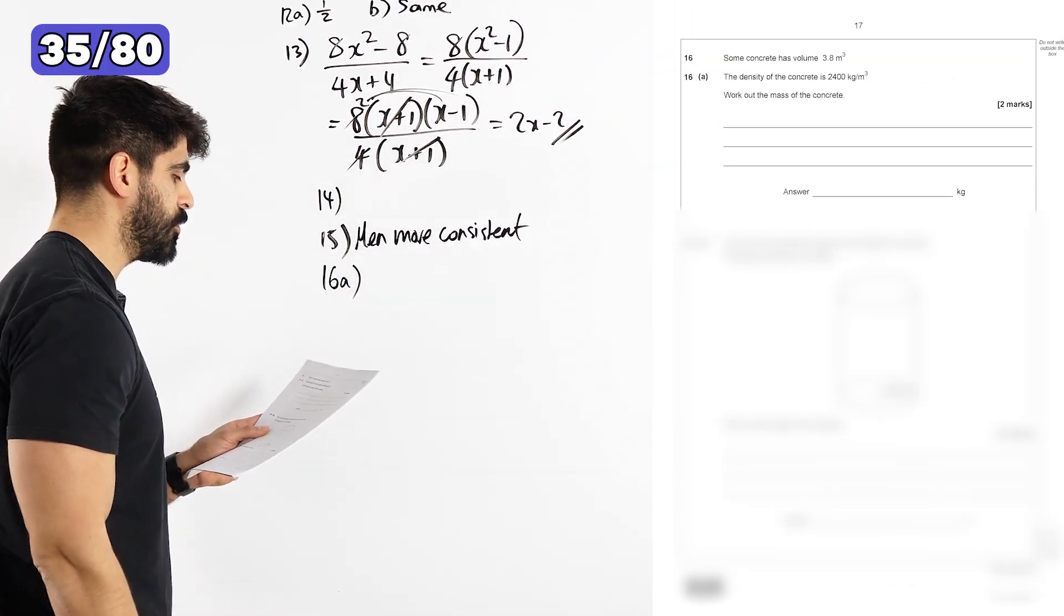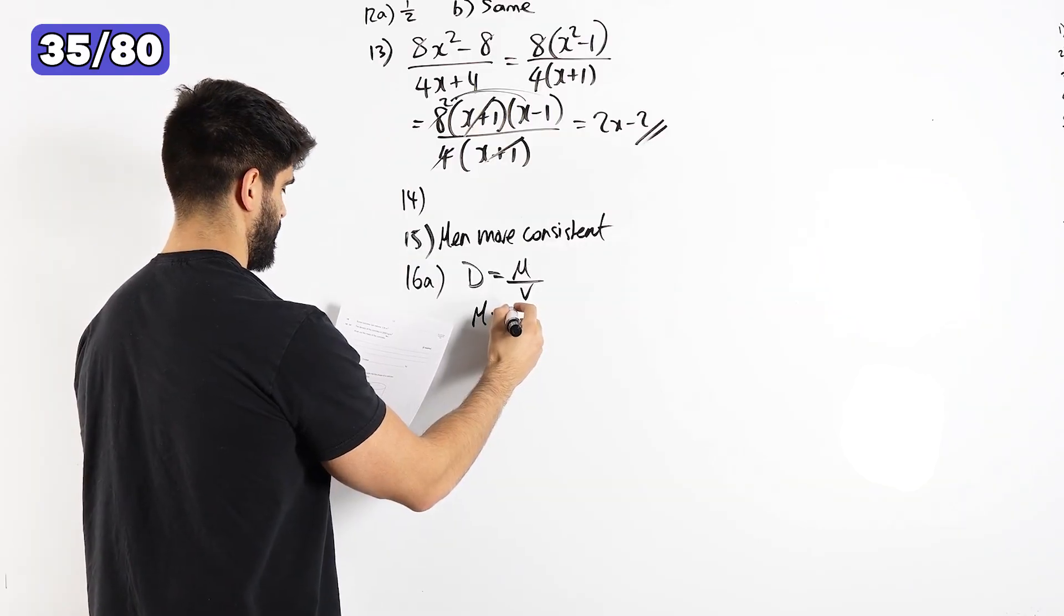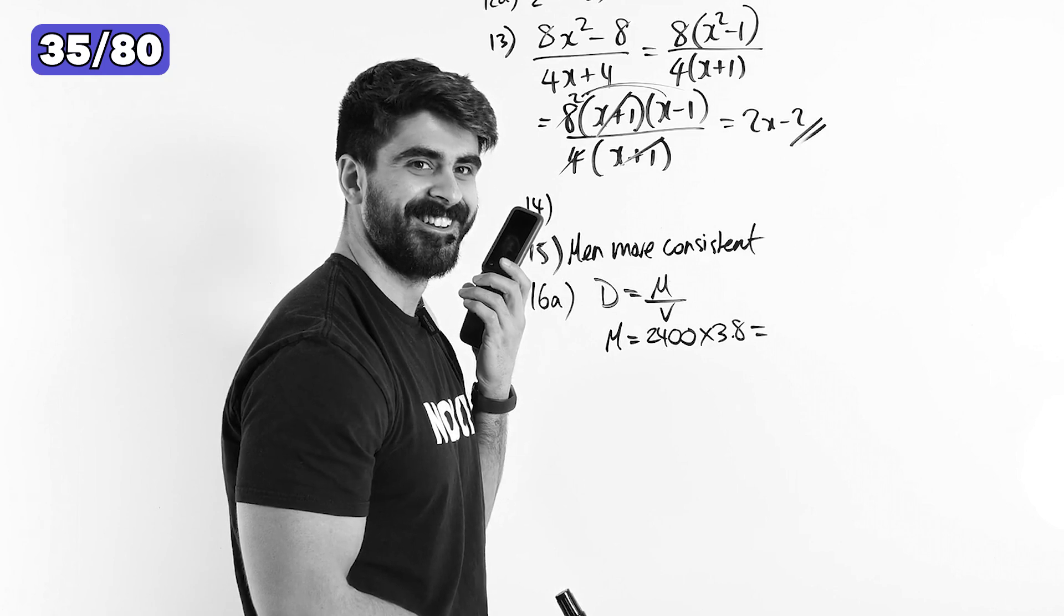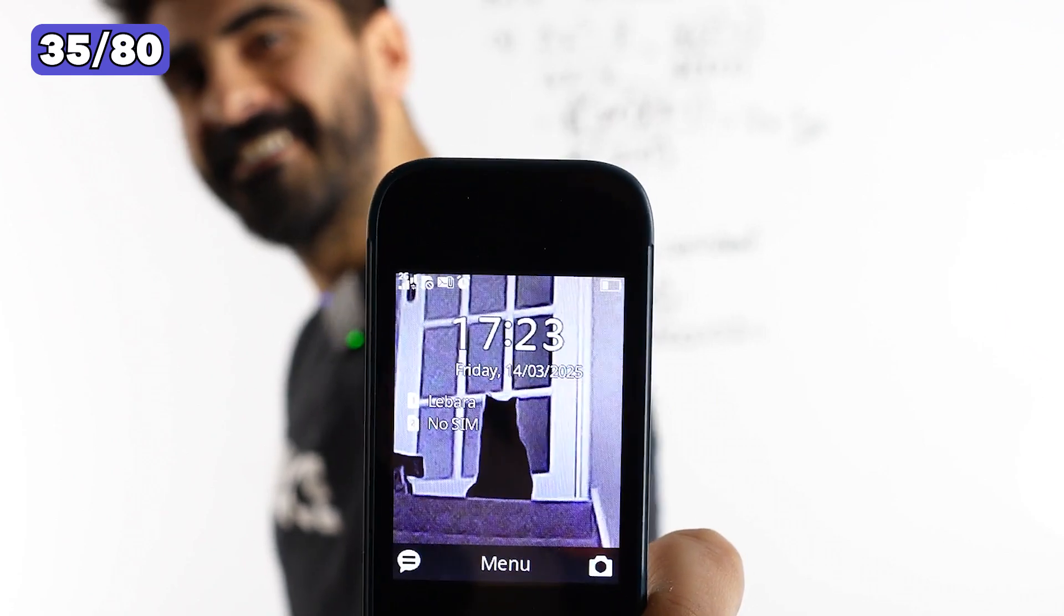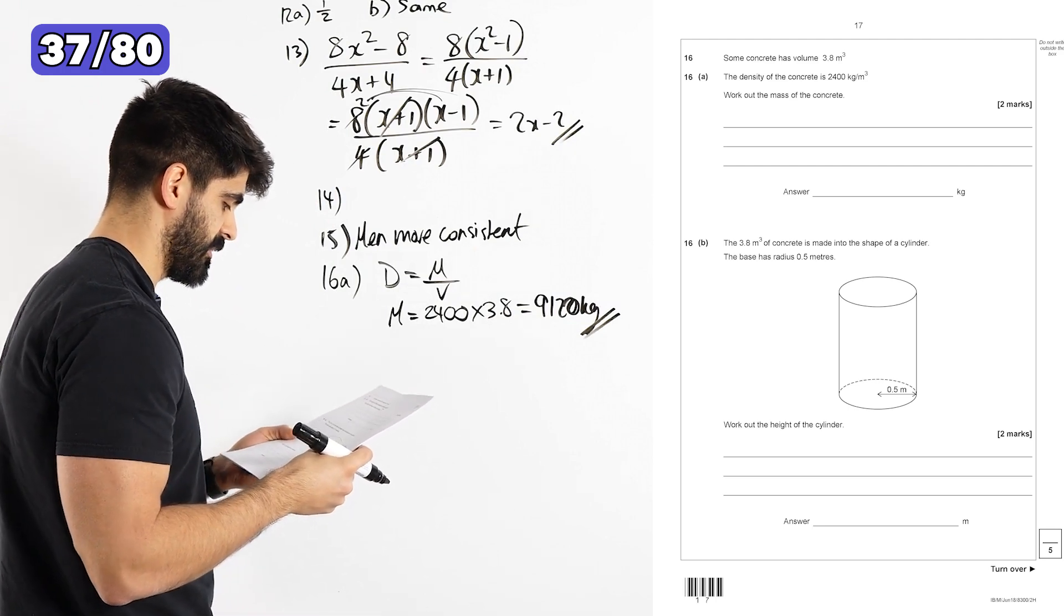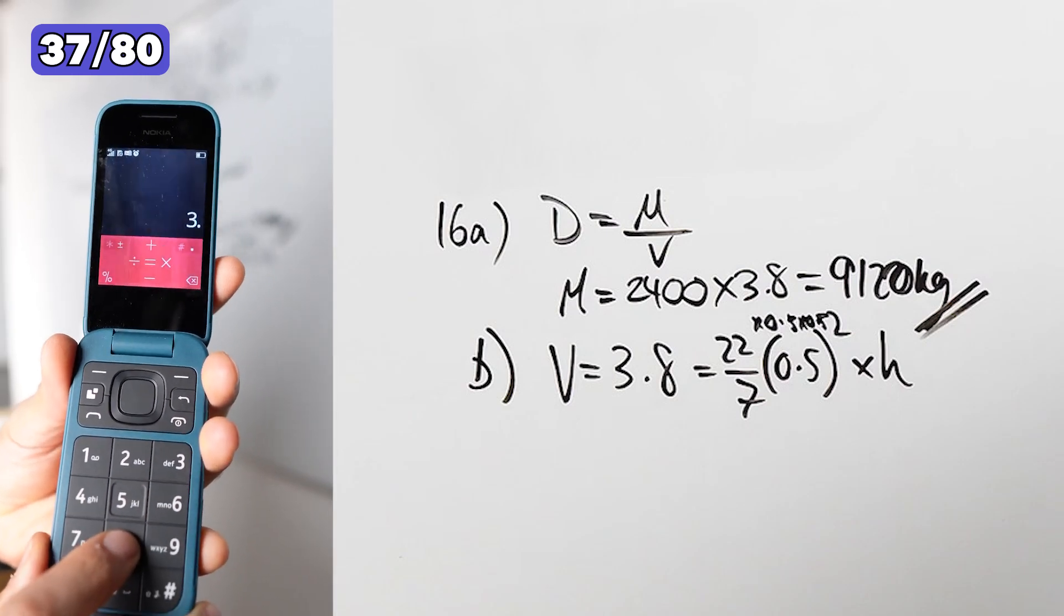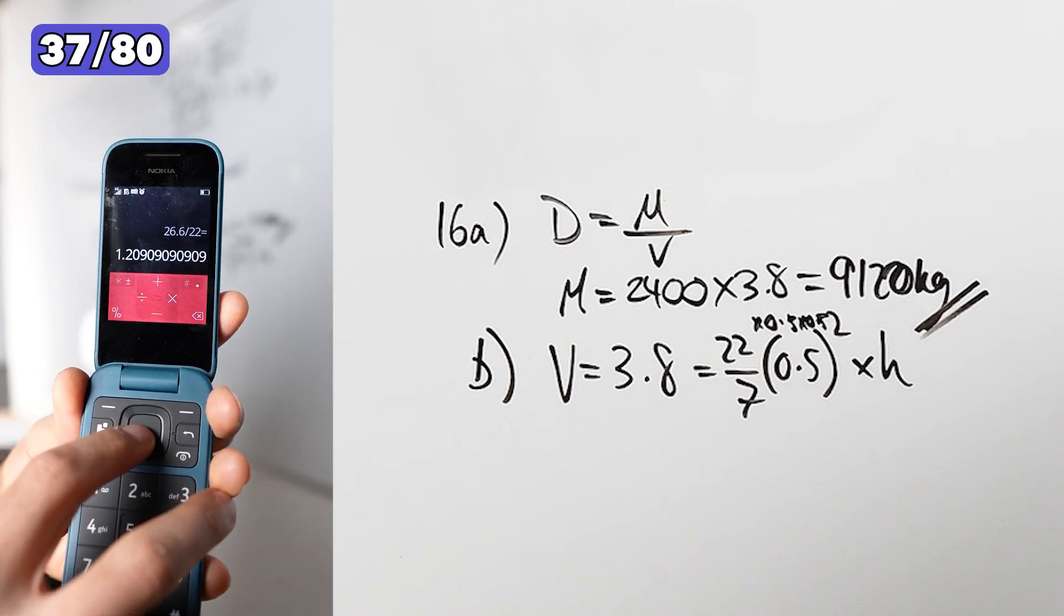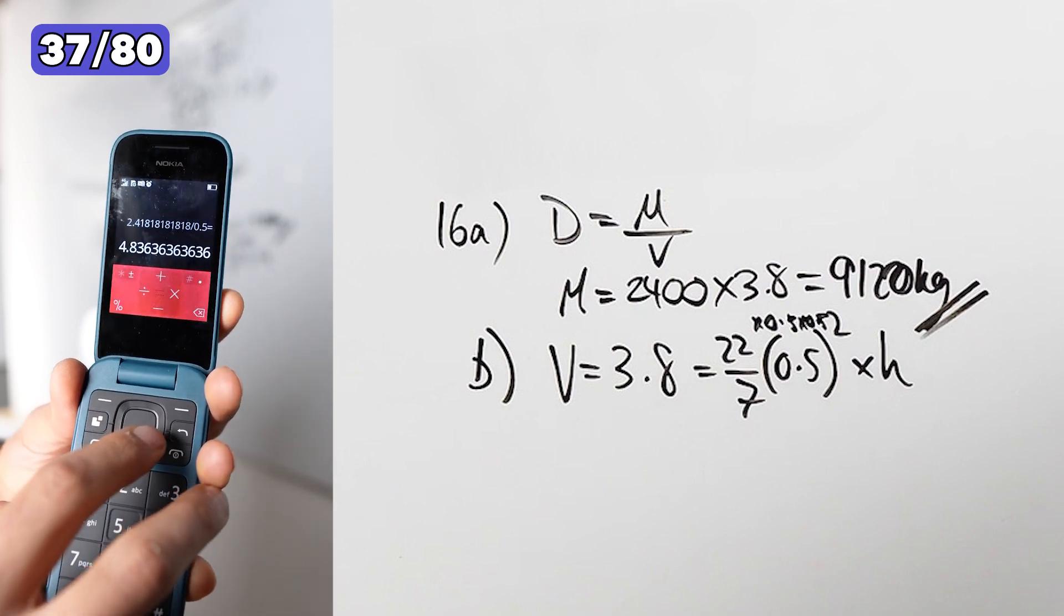Some concrete had volume 3.8 meters cubed. The density is this. Work out the mass. So it's going to be the density, which is 2400 times 3.8. Now I need to turn my phone back on. You'll see my background full of Chi Chi. Can you see it? The 3.8 meters cubed of concrete is made into a shape of a cylinder. The base of cylinder is 0.5. Work out the height. So 3.8 times 7 equals divide 22 equals divide 0.5. Then divide 0.5. About 4.84 meters.